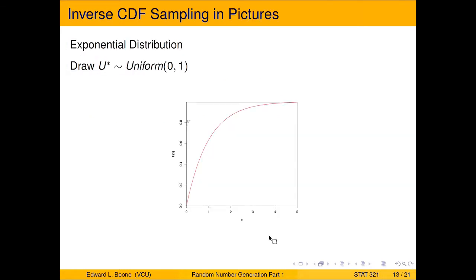Okay, so inverse CDF sampling in pictures. The very first thing we're going to do is we're going to take and put our CDF up here. It's not the distribution or the density, it's the actual cumulative probability distribution. I'm going to draw a value along this axis. It's between zero and one and it's uniform. And I've denoted, here's where my point is right here.